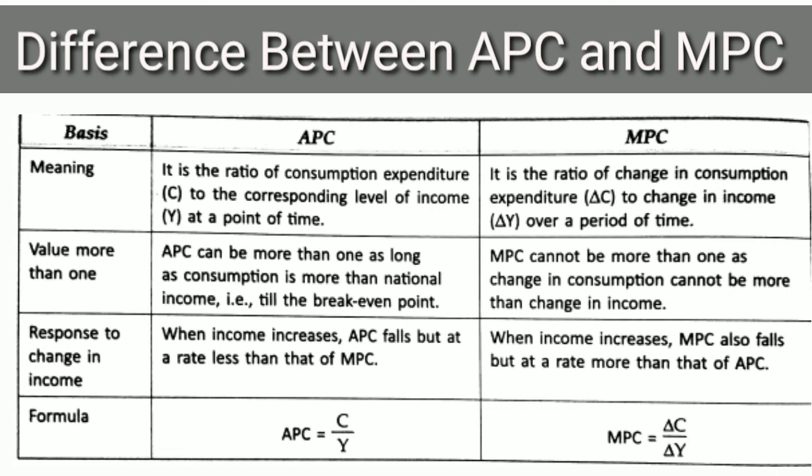APC can be more than one because consumption is more than the income before the breakeven point. As long as the consumption is more than the income the APC can be more than one. But the MPC cannot be more than one as the change in consumption cannot be more than change in income. When the income increases APC will fall because as the income increases consumption too increases but the increase in consumption is less than the increase in the income. That's why APC falls but at the rate less than that of MPC. But when the income increases MPC will also fall but at a rate more than that of APC and MPC remains the same throughout.